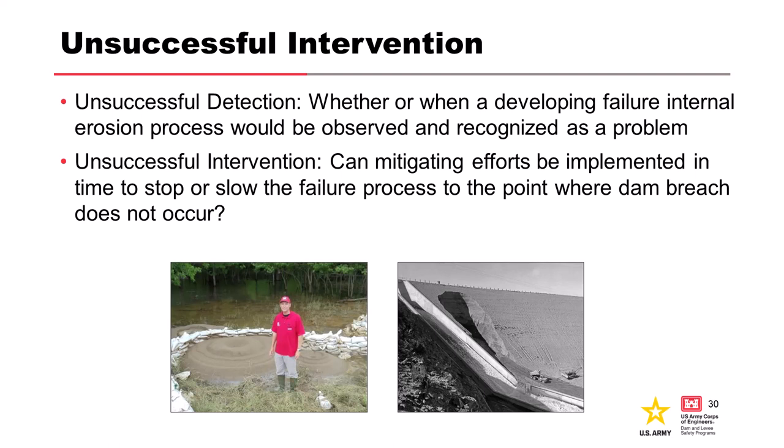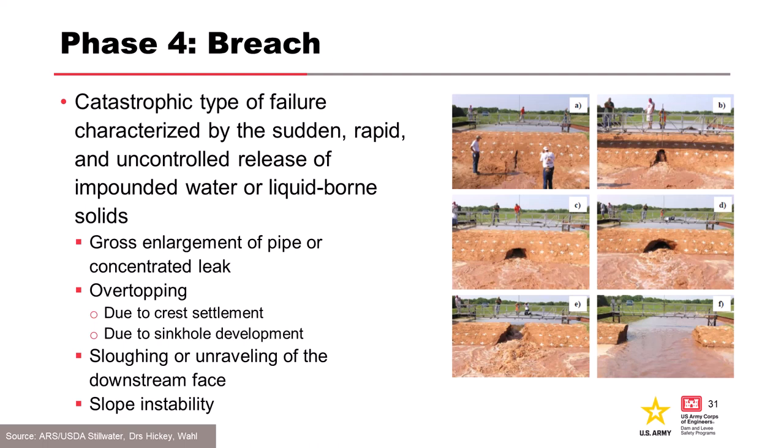The fourth and final phase is catastrophic failure — it can look like a lot of different things. Uncontrolled release of impounded water or liquid-borne solids occurs as gross enlargement of the pipe or concentrated leak starts to get really big, the crest collapses, we overtop, and bad things happen. Sloughing or breaching can look like a lot of different things — sometimes it's really hard to tell. It could be sloughing or unraveling on the downstream face until we eventually lose the crest.